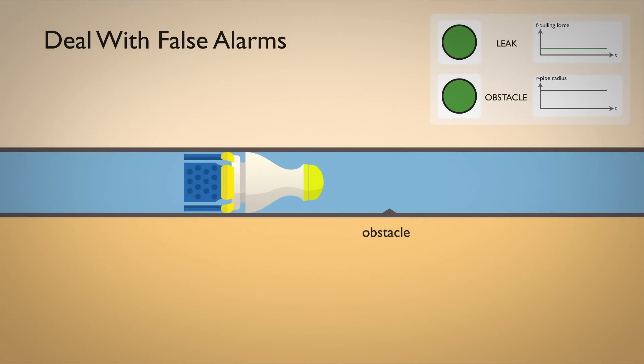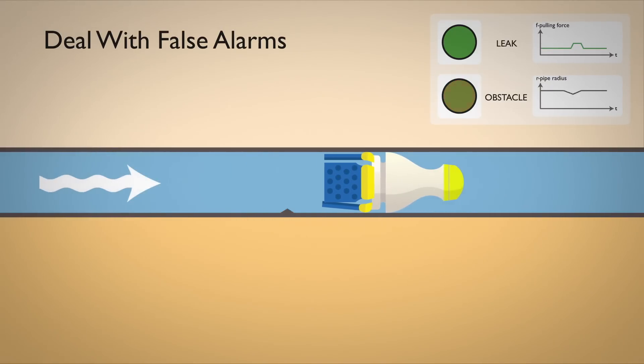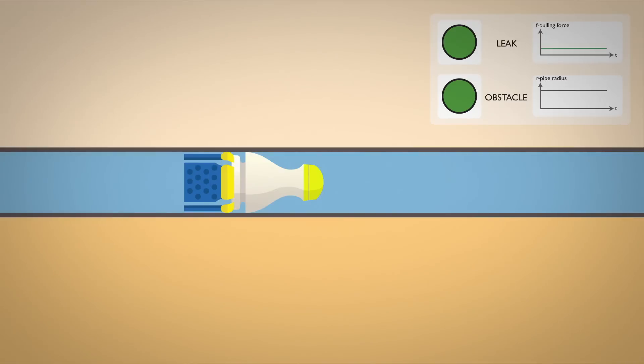In a pipe, obstacles can be dirt, scales, or other kinds of pipe diameter reductions. When the robot passes an obstacle, the yellow support will be compressed. Combining the compression signal and the stretch signal, the robot can differentiate leaks and obstacles.